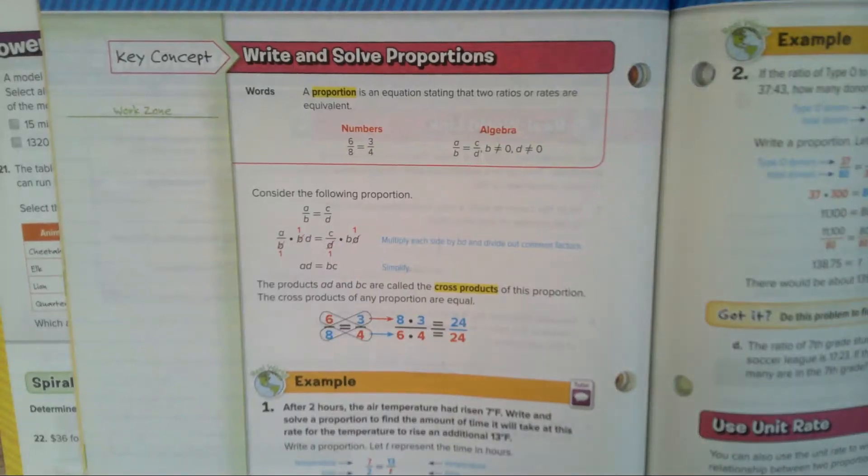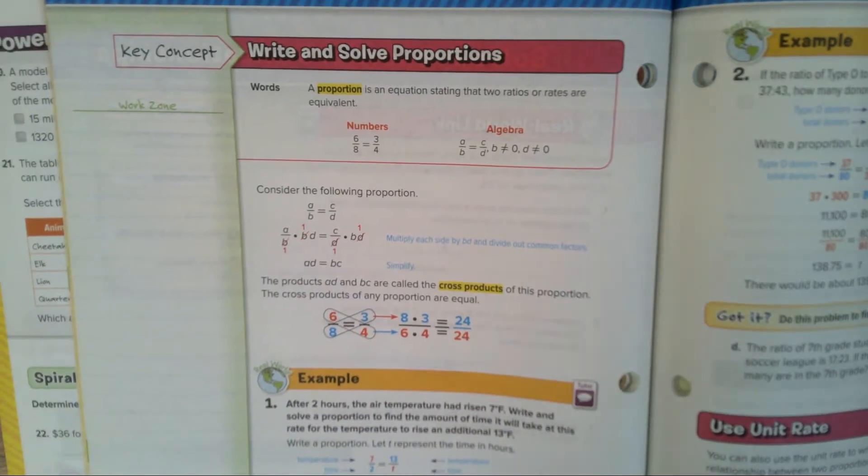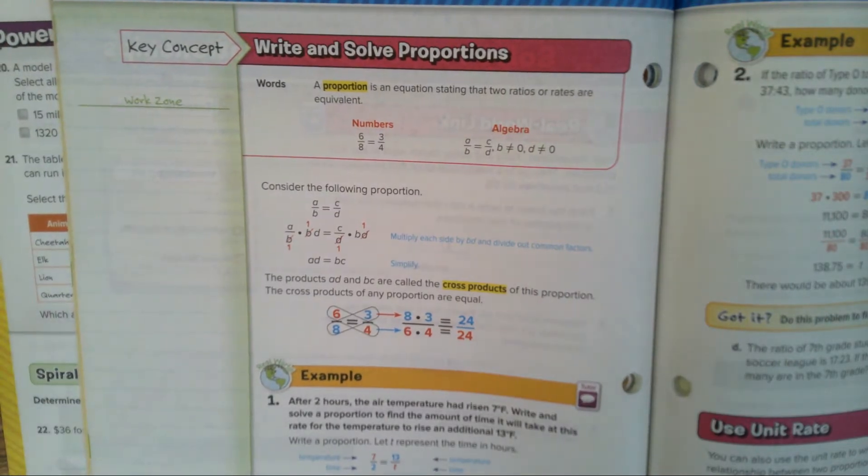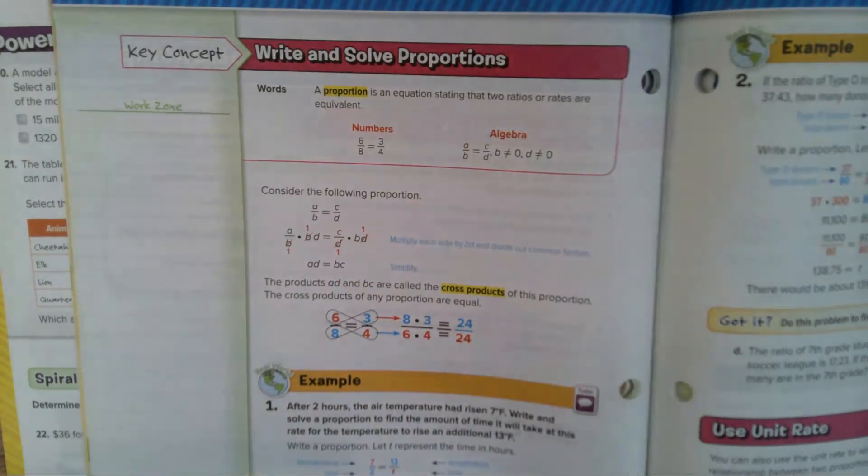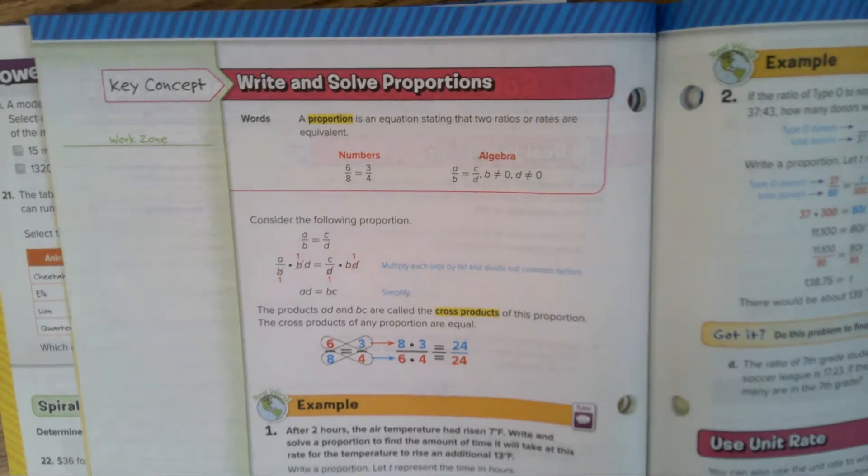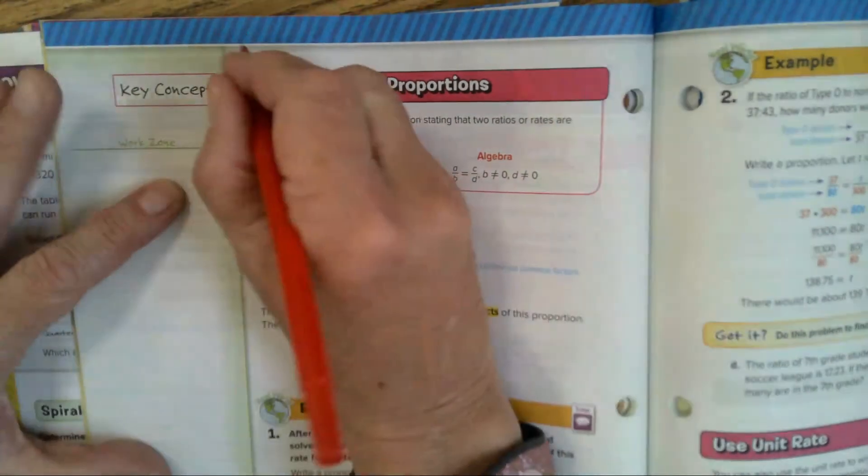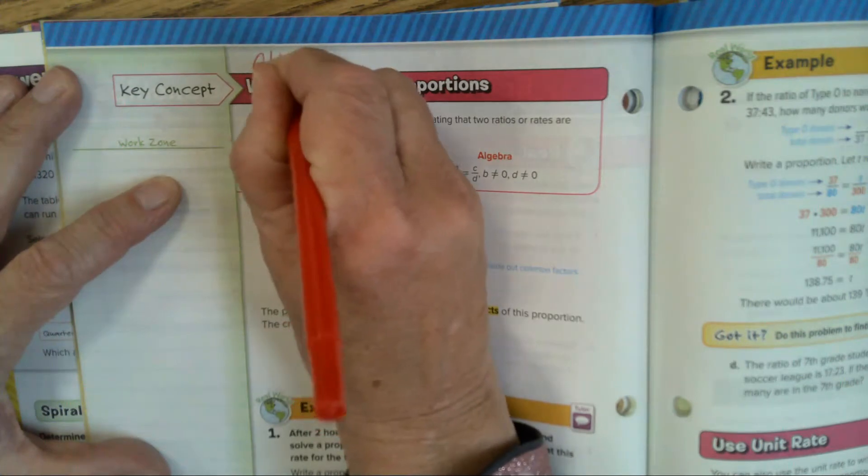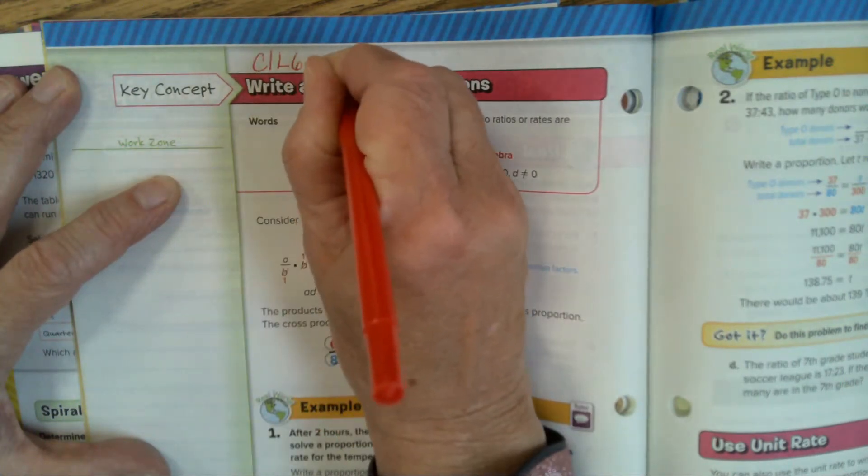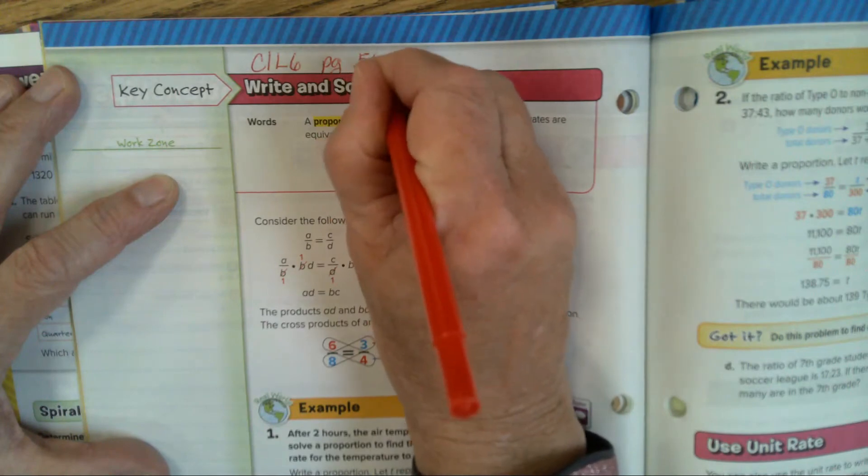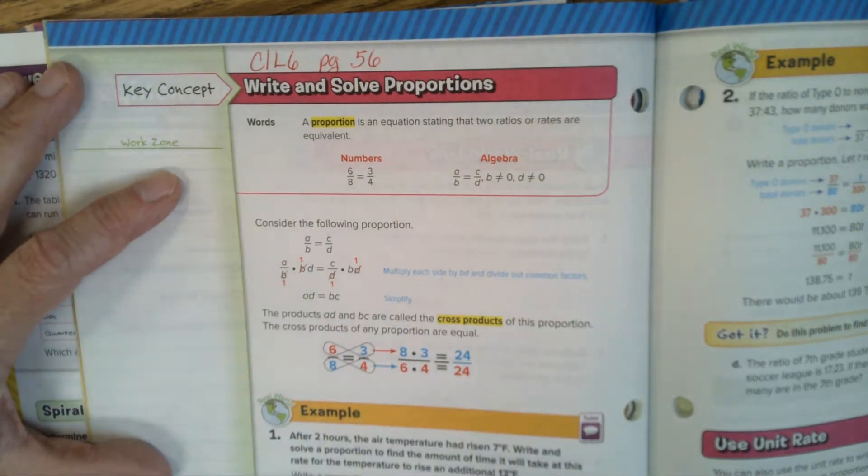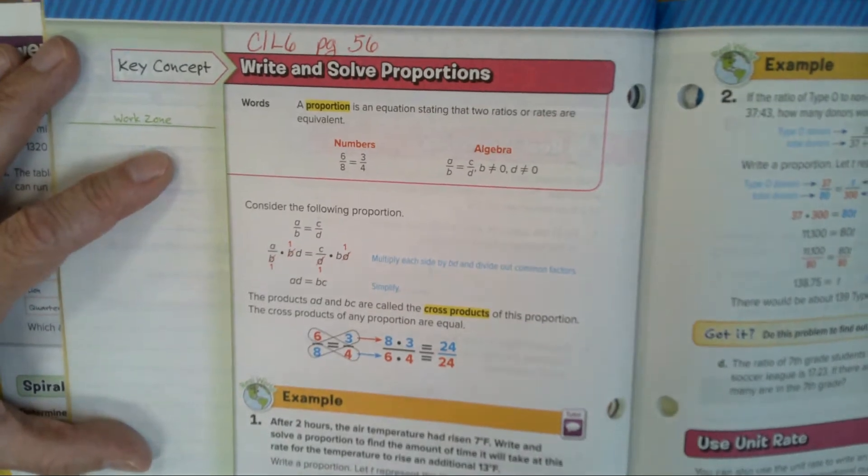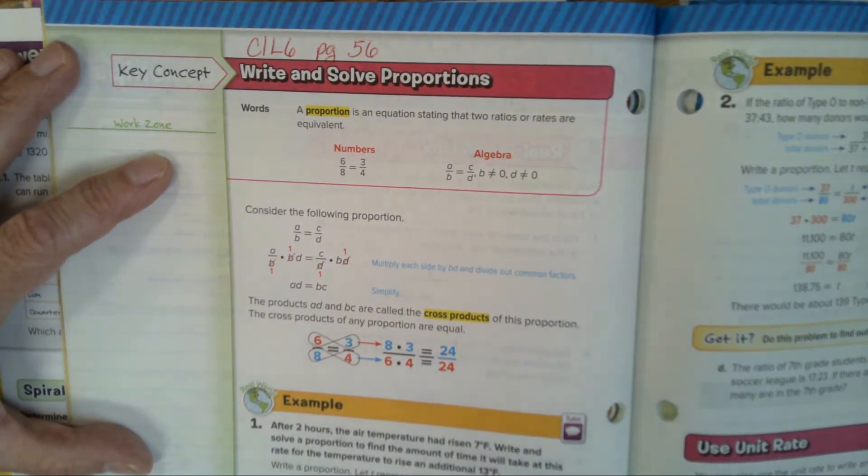All right. Hi, this is Mrs. Robertson and today we are doing Chapter 1, Lesson 6, Solving Proportional Relationships. We are going to skip the first page and go right on over to page 56. So this is Chapter 1, Lesson 6, page 56. Now if you have your e-book, you can watch the little video that's a BrainPop video.